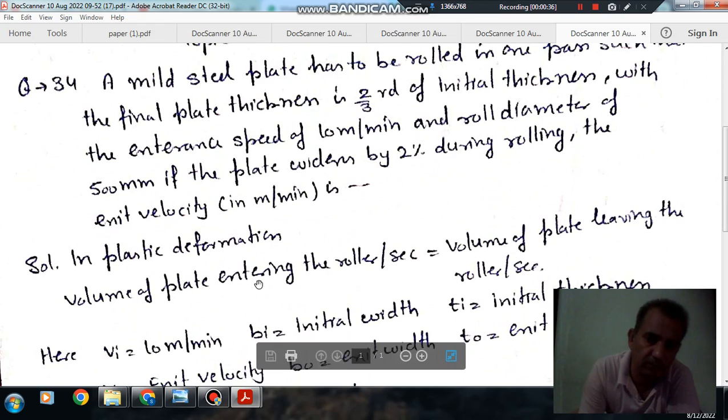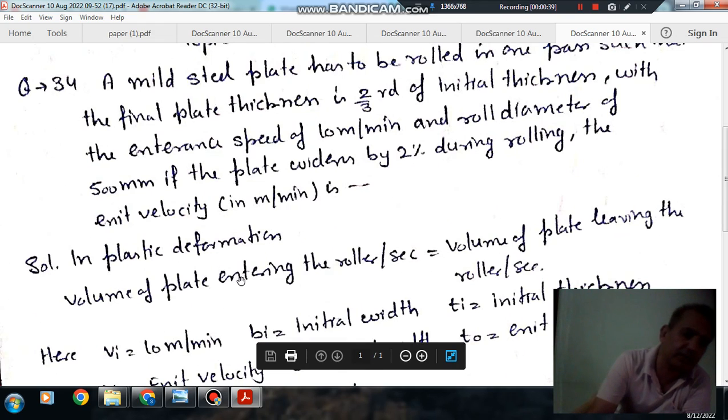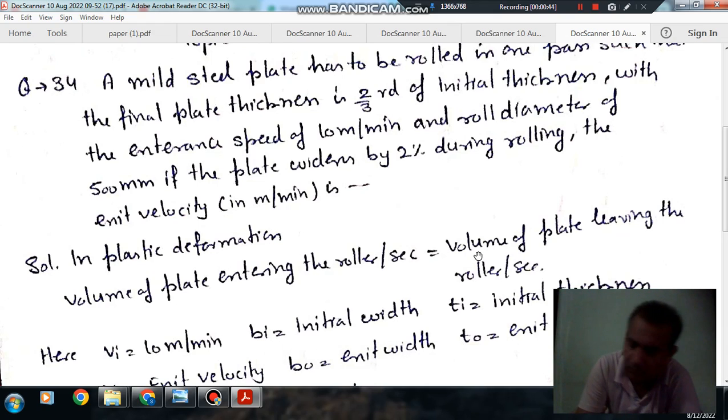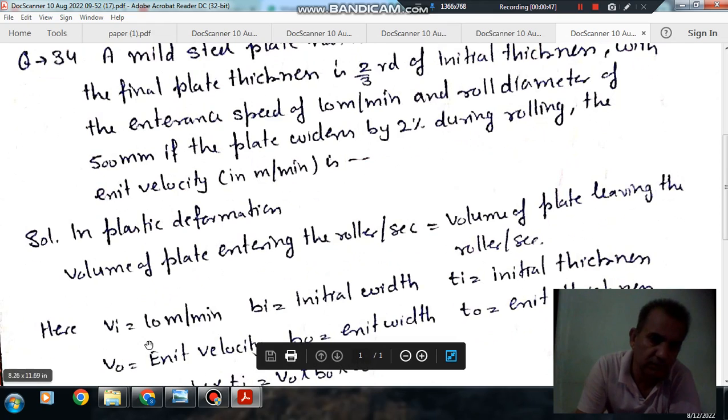In plastic deformation during rolling, the volume of plate entering the roller per second is equal to the volume of the plate leaving the roller per second. So initial velocity is 10 meter per minute.